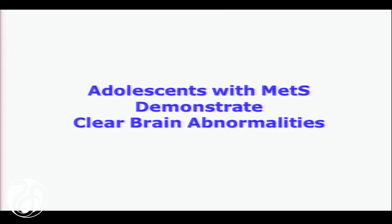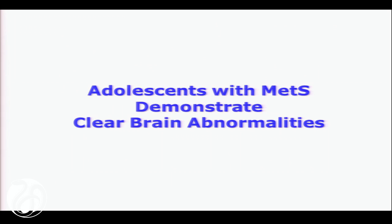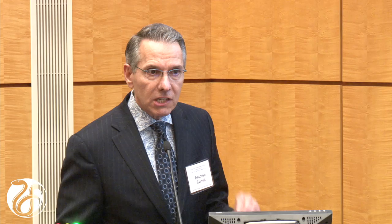So adolescents with metabolic dysregulation demonstrate clear brain abnormalities. We use slightly modified criteria for how we define metabolic syndrome because in kids, by the time a kid has impaired fasting glucose, that horse is already out of the barn. There are few kids that have impairment in metabolic regulation that have abnormal glucose levels.